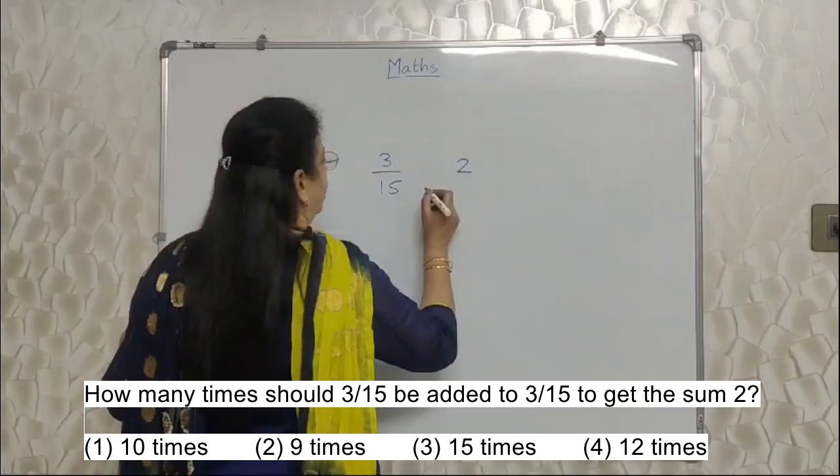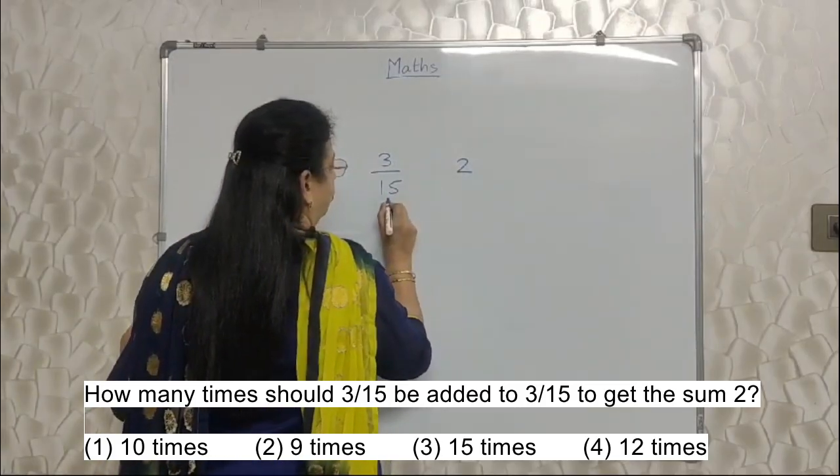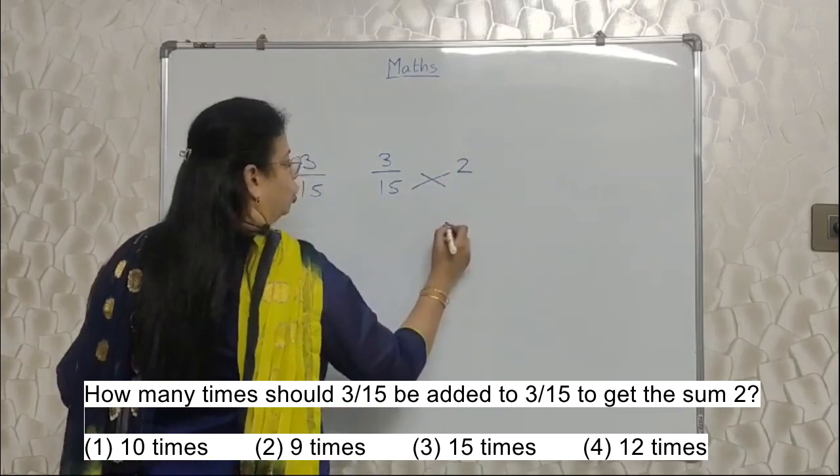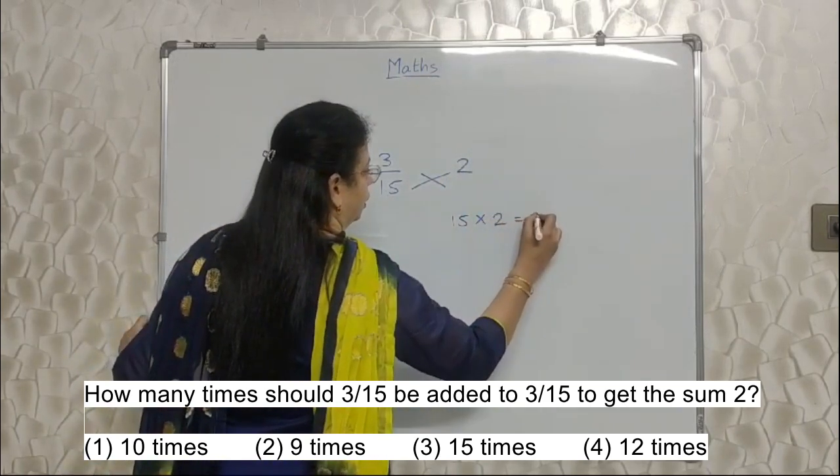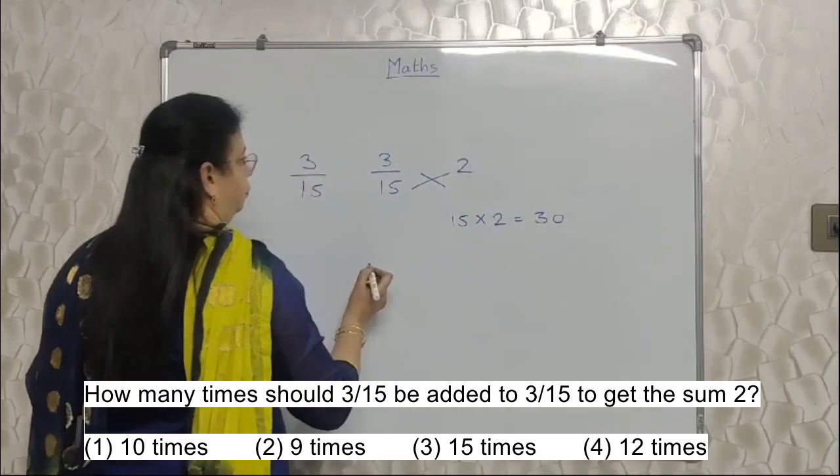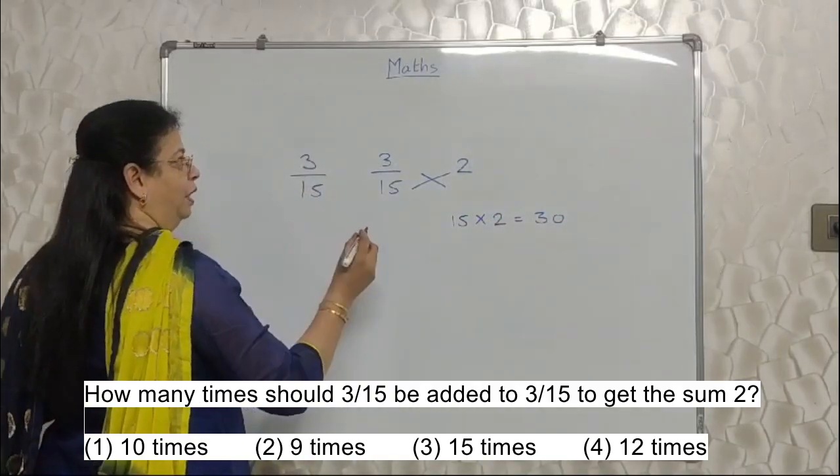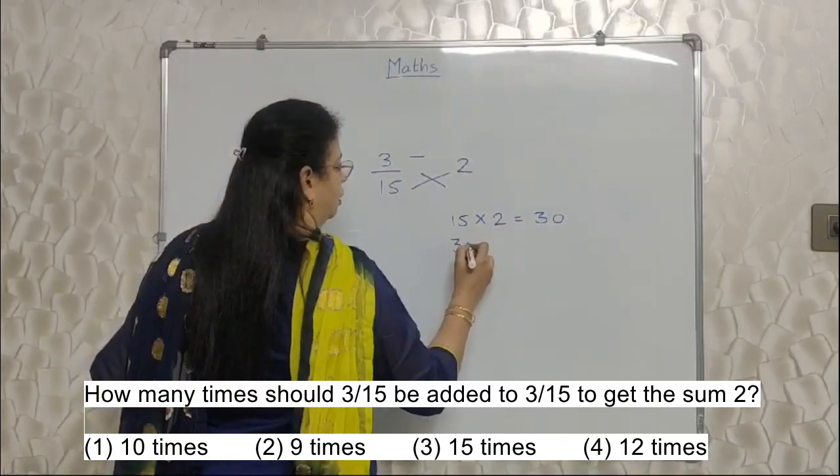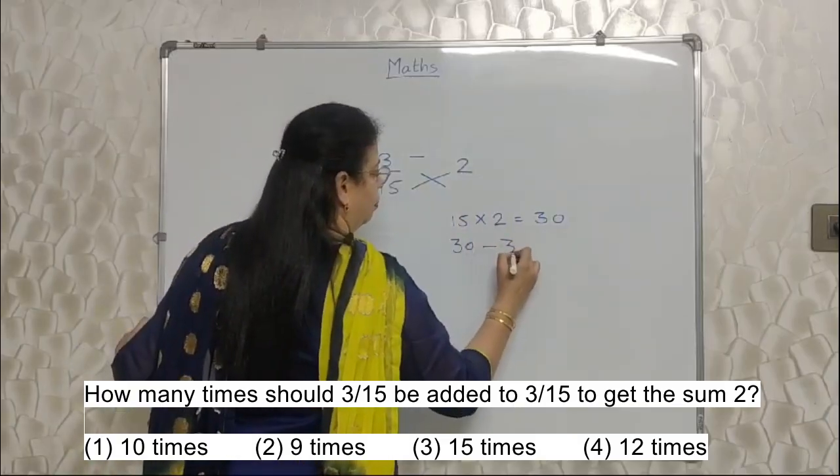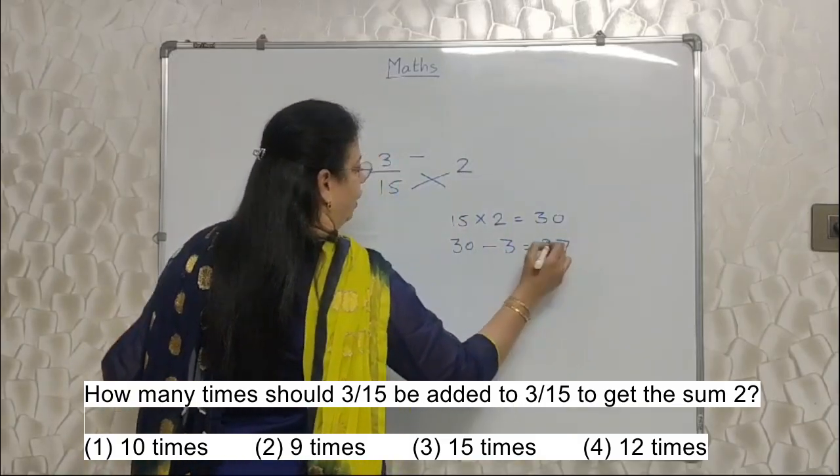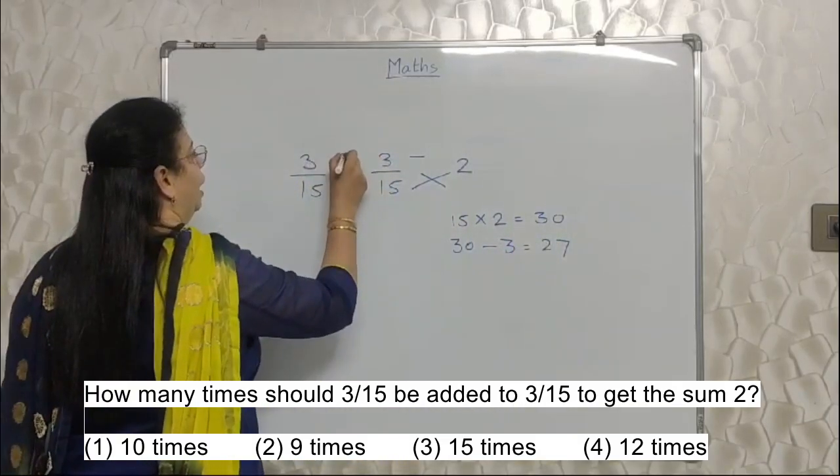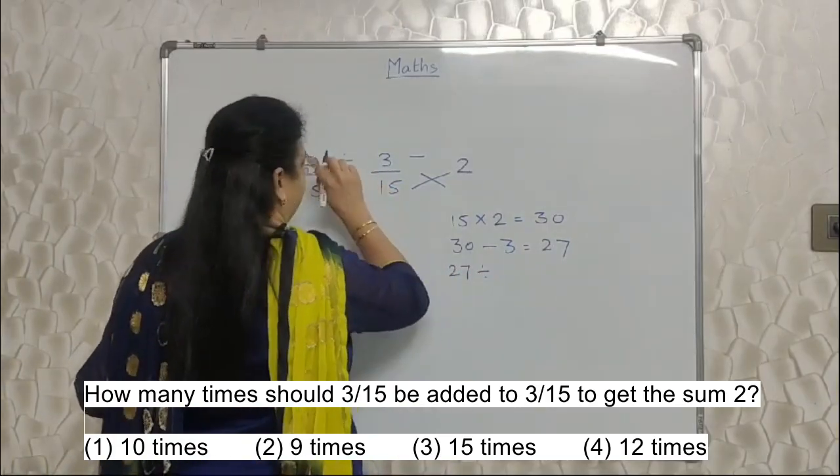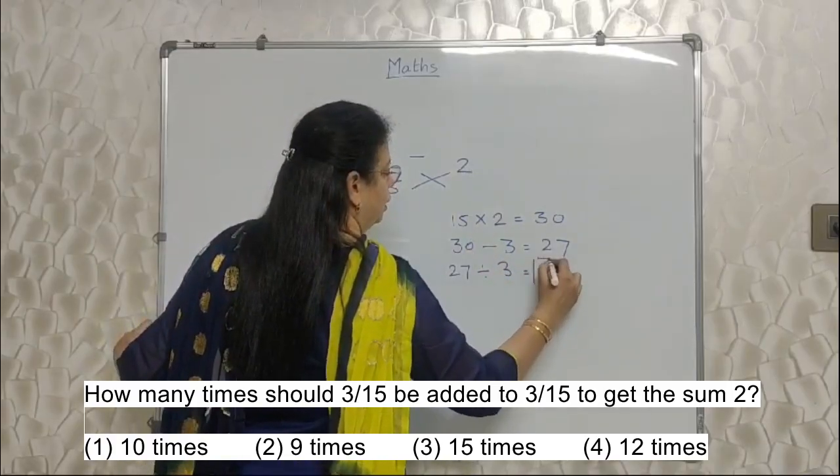Now I am sharing a shortcut. Start from this 15, multiply with this 2. So 15 into 2 I am doing first, that is 30. After that, I am doing minus. Whatever is the answer, from that I am minusing this number, that is 27. Then I am doing division, 27 divided by this number now, 3. So answer is 9.